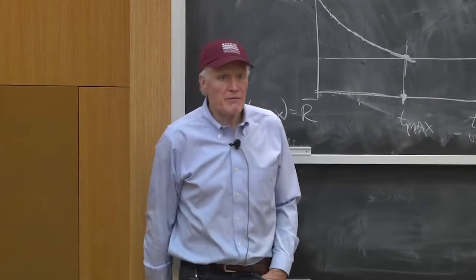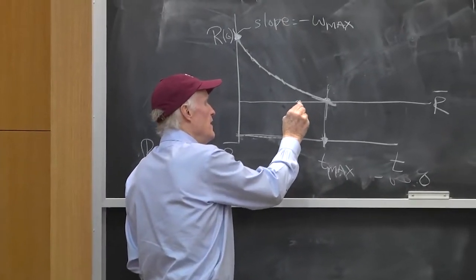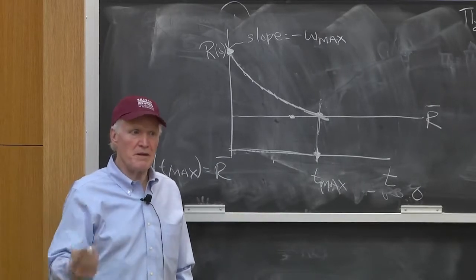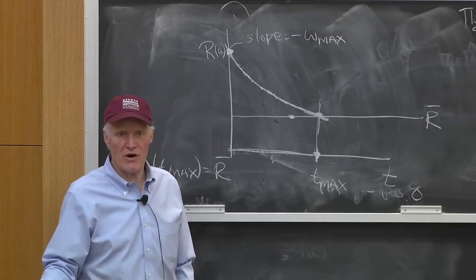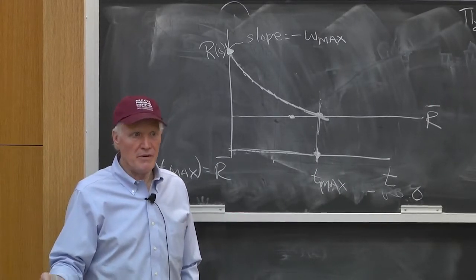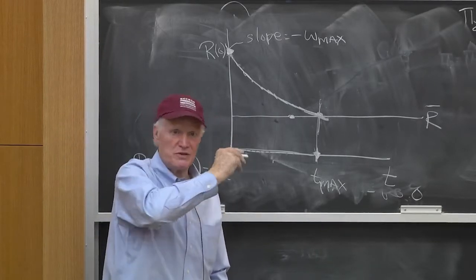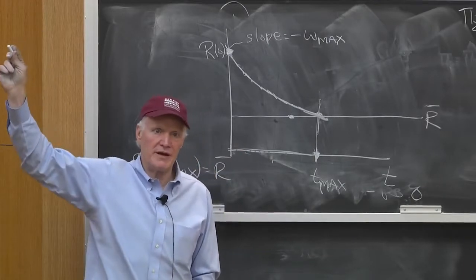Then we would start at some point. There would be some W min, which would be the minimum wage guy who's willing to pay R bar. We would then follow the curve from that point in. It would look just like this picture. It would just follow the curve from that point in.